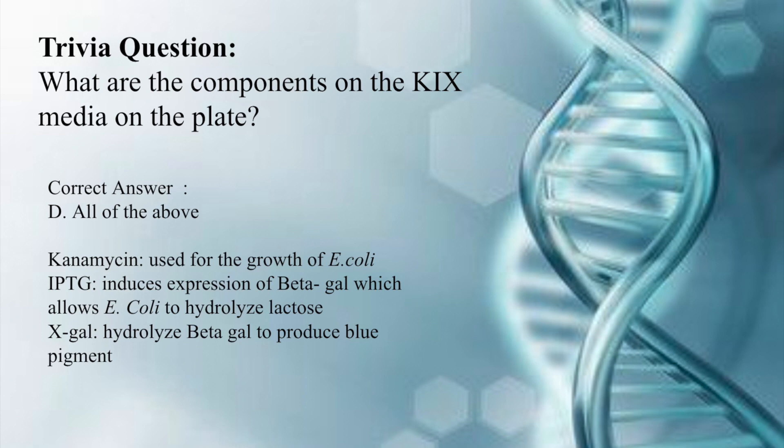The correct answer is all of the above. The K stands for kanamycin which is used in the growth of E. coli. The I stands for IPTG which induces expression of beta-gal which allows E. coli to hydrolyze lactose. And the X in Kix stands for X-gal which hydrolyzes beta-galactose to produce the blue pigment.